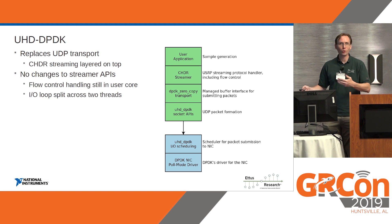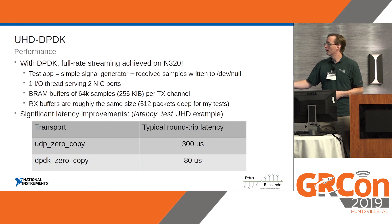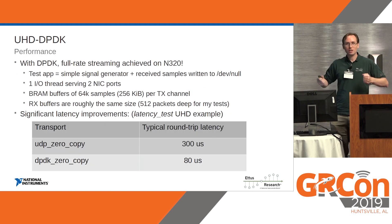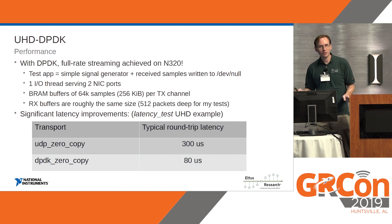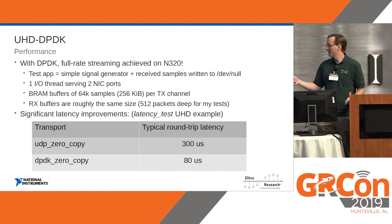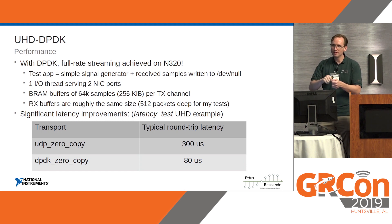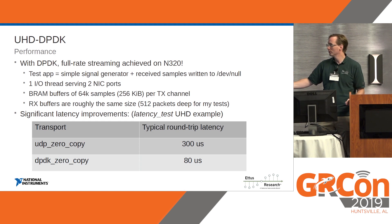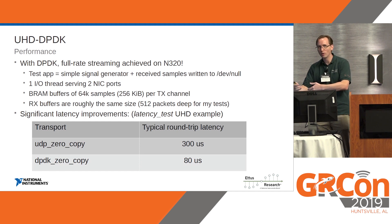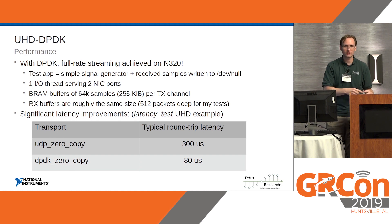Including your own configuration for which cores you want to use. In terms of performance, we've achieved full-rate streaming — 250 mega-samples per second, two channels to each device, no problem. We ran a test to show the difference in latency, measuring from the output of the RX port on the radio going back to the device, then sending a TX packet out and measuring at the TX port on the radio. Using the kernel, that would be about 300 microseconds. With DPDK, we reduced it all the way down to 80 microseconds. Keep in mind, this is also going through the DDC and DUC and a bunch of other blocks on its way there.